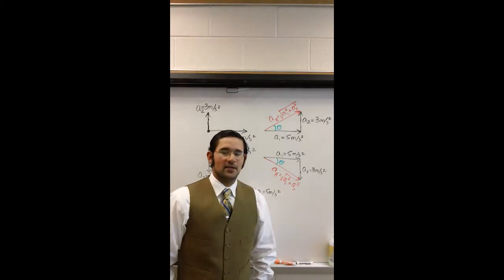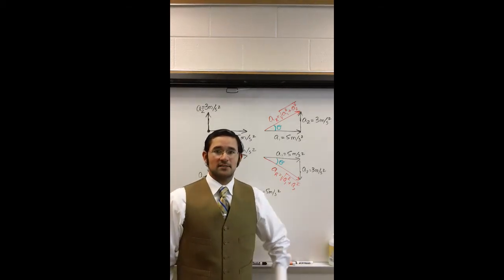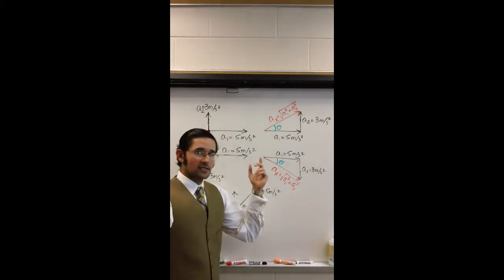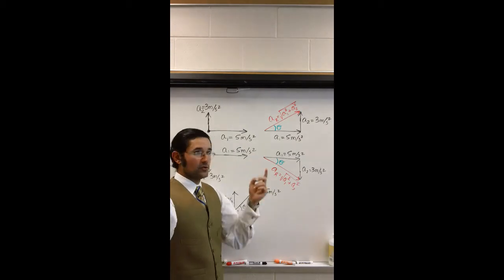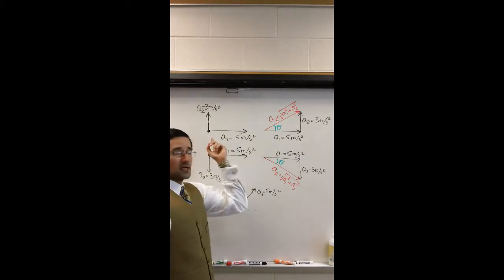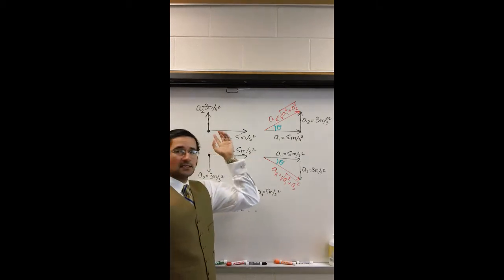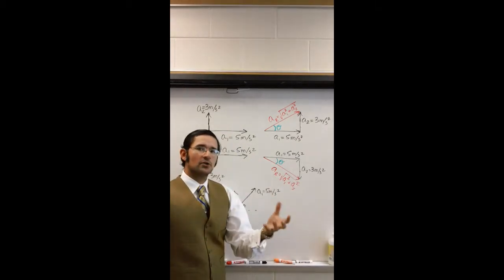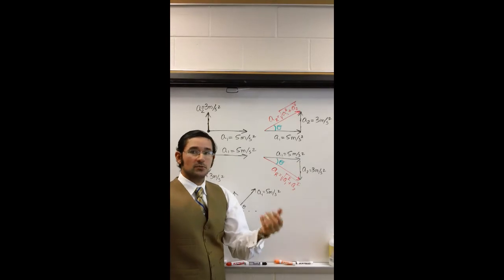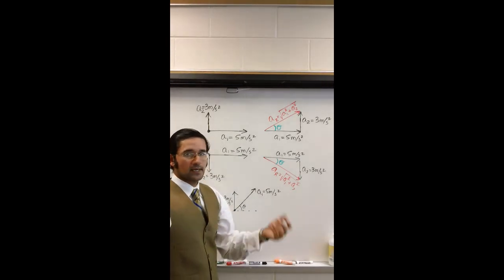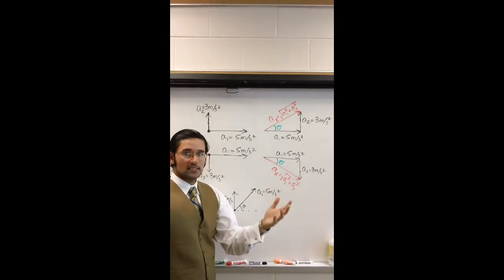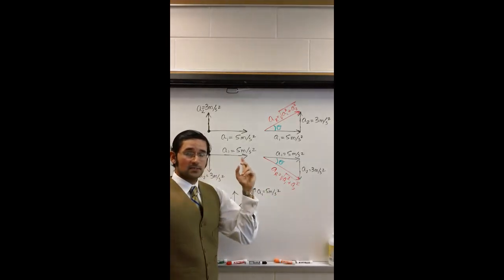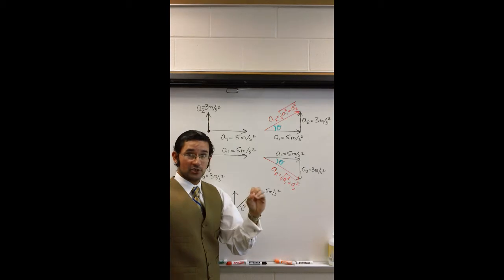This is the second video on vector addition. There are a couple of scenarios that I've put together for you. The first scenario is, let's say you have an object. That object could be a car, it could be a person, it could be a skateboard, bicycle, whatever the case may be. And in this case, I'm just representing that object by a dot.